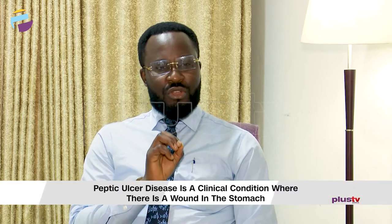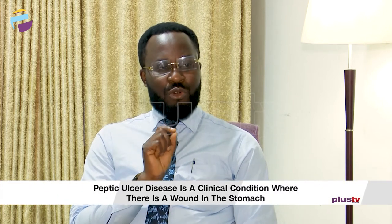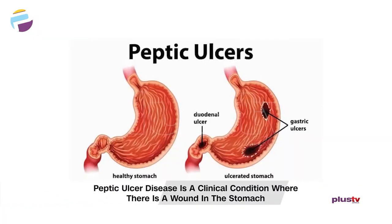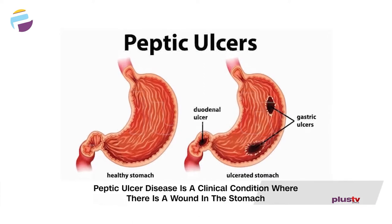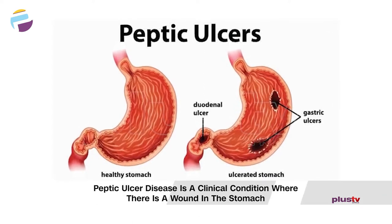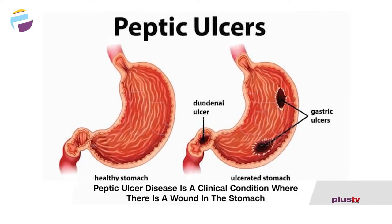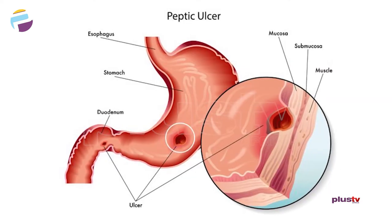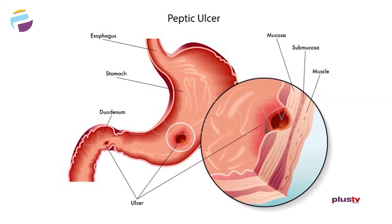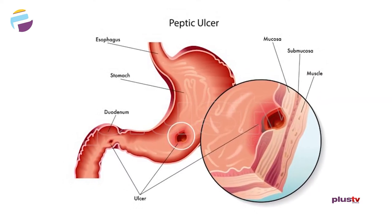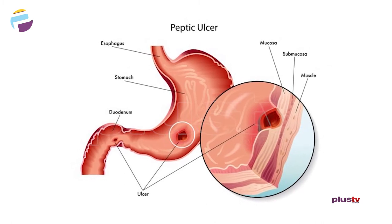Peptic ulcer disease is a clinical condition where there is an ulceration — a wound in the stomach. Peptic is coined from the name peptic acid. Peptic acid is found in the gastric, so sometimes you hear gastric ulcer, sometimes peptic ulcer; they're not physically different, they are just relating to the stomach.